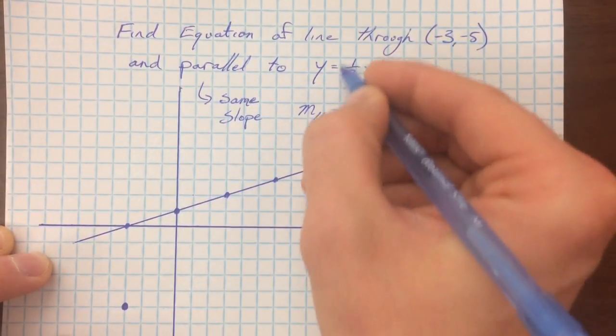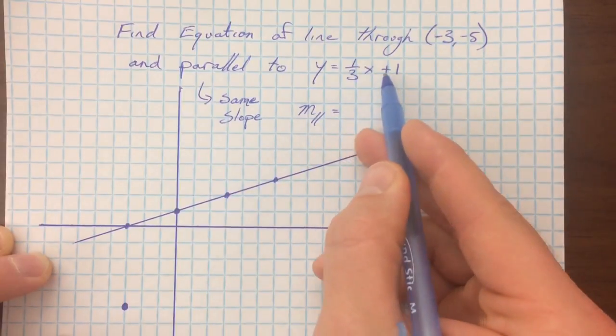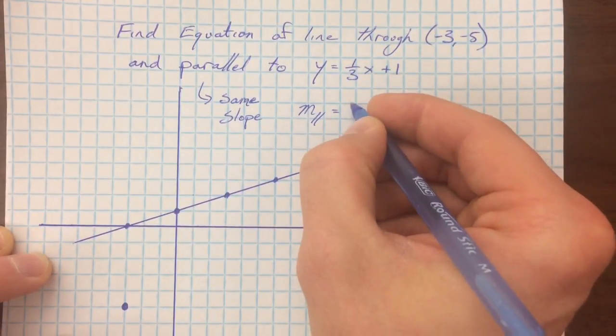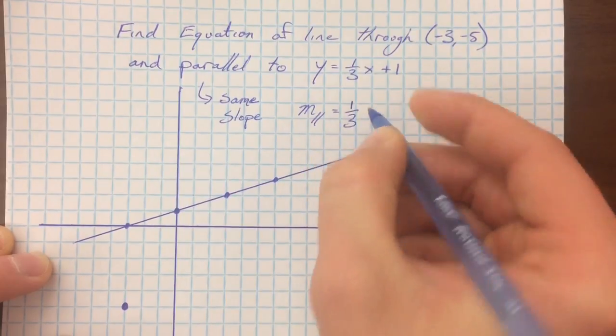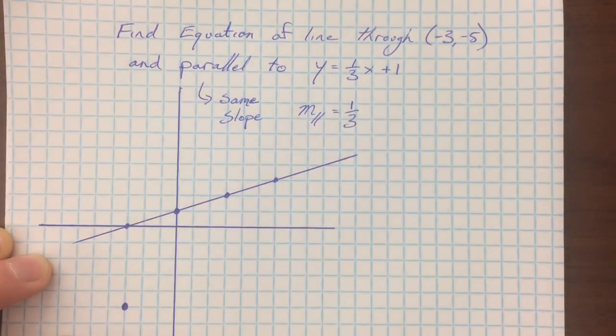The slope of this line, if you can recognize this, is y equals mx plus b. Recognize this is the slope. And so I'm going to use the same slope in my new equation.